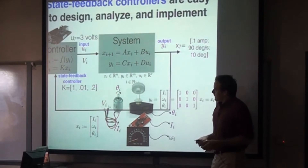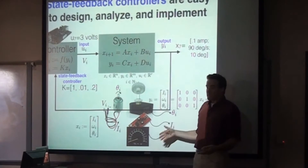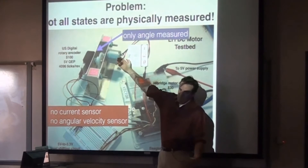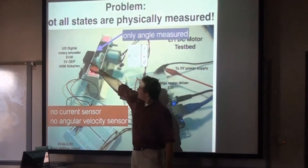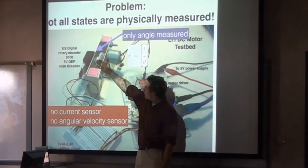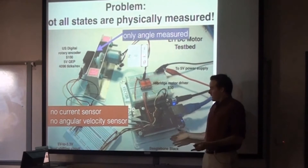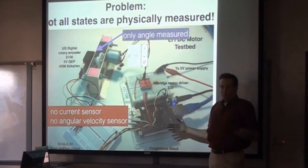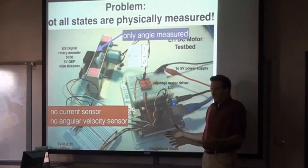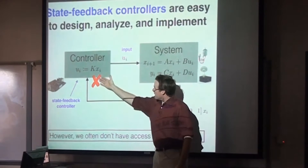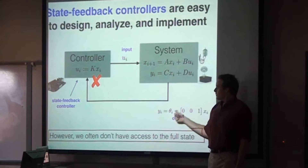But there's a problem. We needed three sensors to implement a state feedback controller — we needed access to the entire state. In my setup, I have a BeagleBone driving a DC motor through a motor driver. The DC motor has current, angular velocity, and angle, but I'm only using this little rotary encoder. I don't have access to the current and the angular velocity — I only have one measurement. If you're designing a rocket, you might not be able to handle the weight of all the sensors needed. So you're in a situation where you cannot implement a state feedback controller because you only have a single tiny sensor.